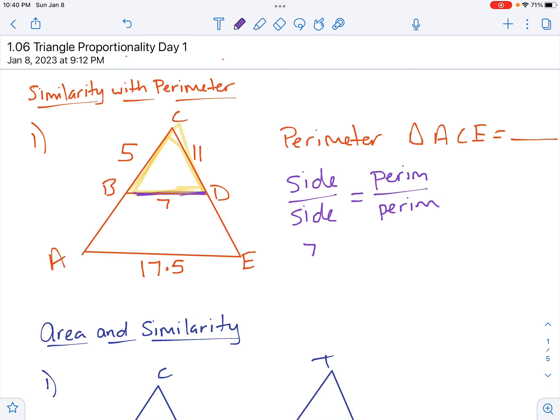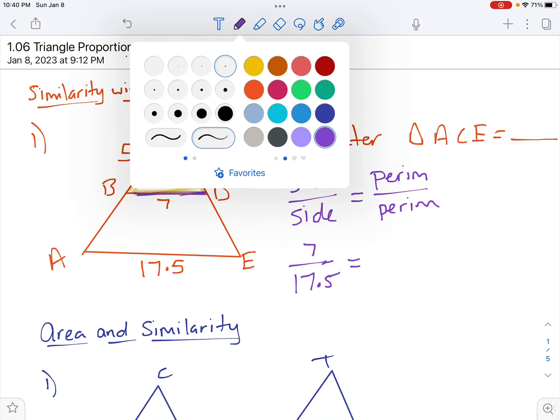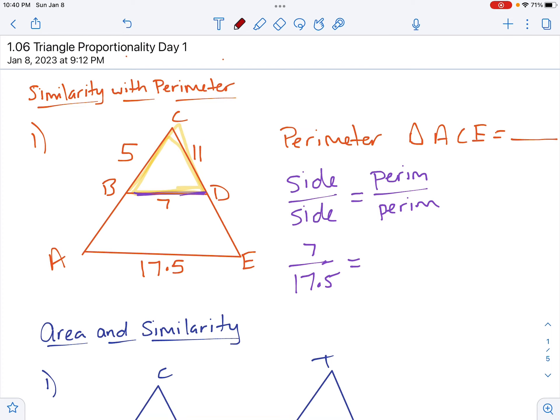The bottom of this yellow triangle is 7 over the bottom of the big orange triangle is 17.5 equals the perimeter. Perimeter means we add them together. So 5 plus 11 plus 7. 5 plus 11 would be 16, 16 plus 7 would be 23. Over, we don't know what the perimeter of this big triangle is, so we're going to put that as X.